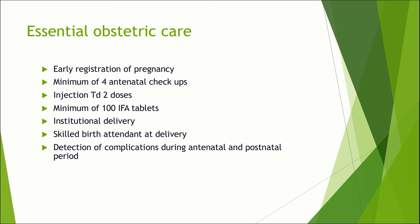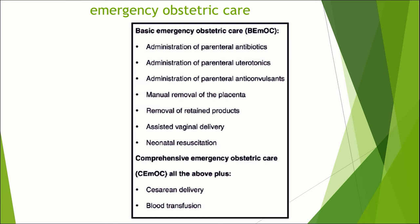We should know about essential obstetric care, which includes early registration of pregnancy, minimum of 4 antenatal checkups, injection of 2 TD vaccines, minimum of 100 IFA tablets, institutional delivery, skilled birth attendant at delivery, and detection of complications during antenatal and postnatal periods. Regarding emergency obstetric care, there are two types: B-EmOC (basic emergency obstetric care) and C-EmOC (comprehensive emergency obstetric care). Basic EmOC includes parenteral antibiotics, uterotonics, anticonvulsants, manual removal of the placenta, removal of retained products, assisted vaginal delivery, and neonatal resuscitation. Comprehensive EmOC includes all of the above plus facilities for cesarean delivery and blood transfusion.